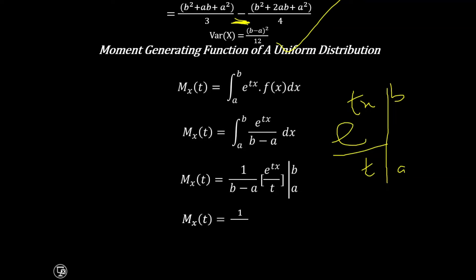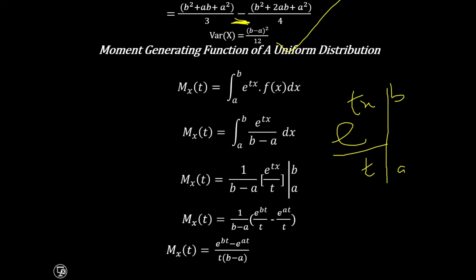We substitute the upper limit, giving exponential bt, minus the lower limit, giving exponential at, all divided by t. Multiplying through, M of t equals 1 over b minus a times exponential bt minus exponential at, divided by t, giving us M of t equals exponential bt minus exponential at, divided by t into bracket b minus a. This is the moment generating function of a uniform distribution.